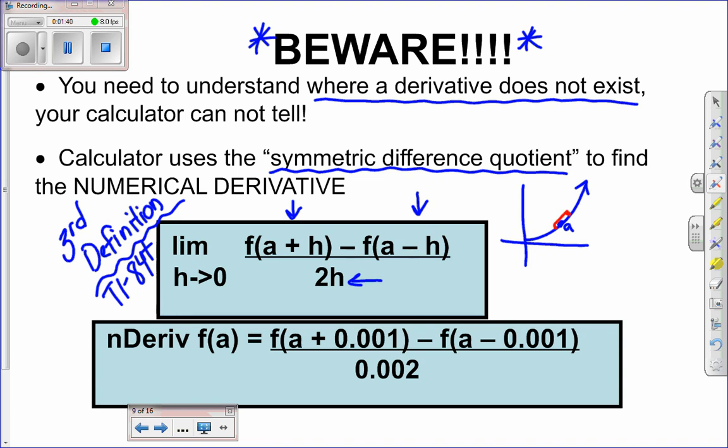And I approach a so that h gets smaller and smaller, you see I'm going to very closely estimate that slope of the tangent line.